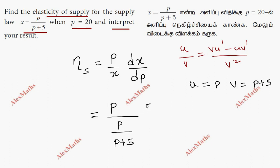So dx by dp, v in the denominator is p plus 5.